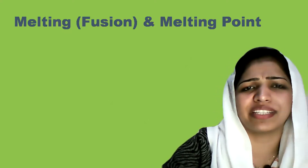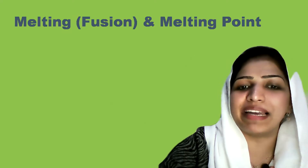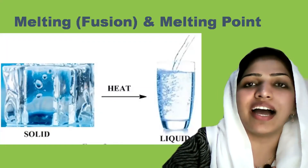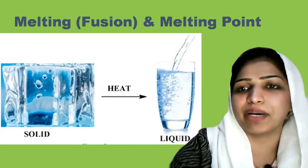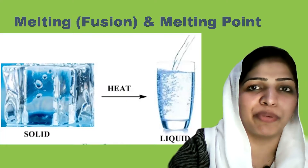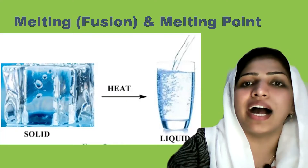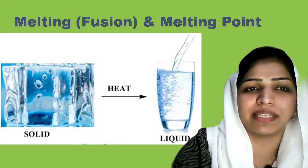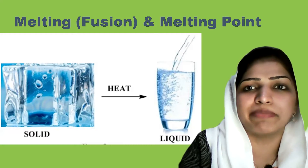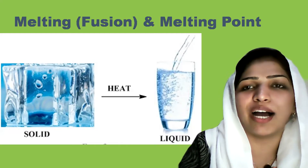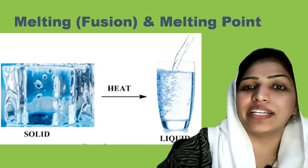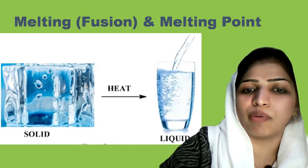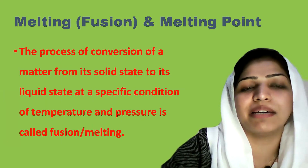We will now learn about state changes. The first is melting, also called fusion. Melting is the conversion of solid into liquid on the application of heat. For example, if we add heat to ice, the particles vibrate and the intermolecular attraction breaks, converting solid to liquid. This phenomenon is called melting or fusion.